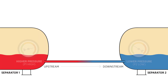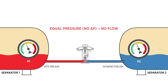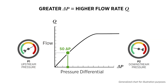Flow always moves from higher pressure to lower pressure. If the pressure is the same on both sides of a valve, there is no flow. Without pressure difference, nothing moves. When pressure differs across a valve, the flow rate depends on that pressure difference. The greater the difference, the higher the flow rate.